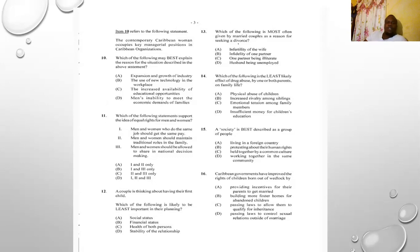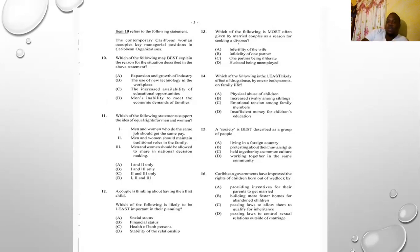Number eleven: which statements support the idea of equal rights for men and women? One — men and women do the same jobs and should get the same pay. Two — men and women should maintain traditional roles in the family. Three — men and women should be allowed to share in national decision making. Statement two is not equal rights, because it forces the man to work and the woman to stay home. So the answer is B — statements one and three only.